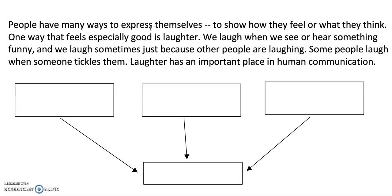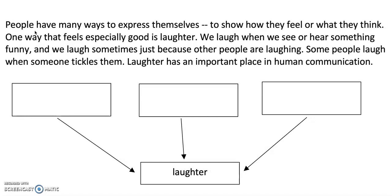We're going to read this text and figure out how to organize it so that it fits this flowchart. We're going to have three things that cause one thing. People have many ways to express themselves, to show how they feel or what they think. One way that feels especially good is laughter. We need three things, and those three things are going to cause this one thing — laughter. Laughter is the effect.